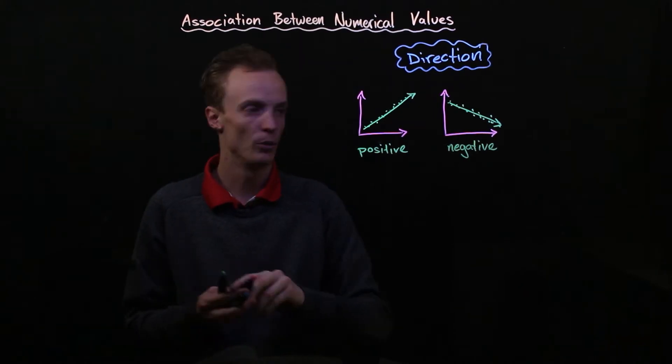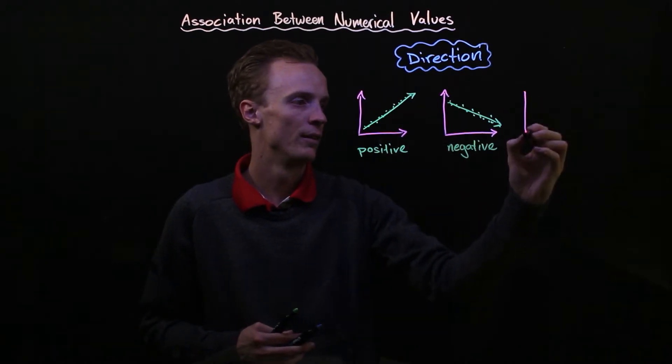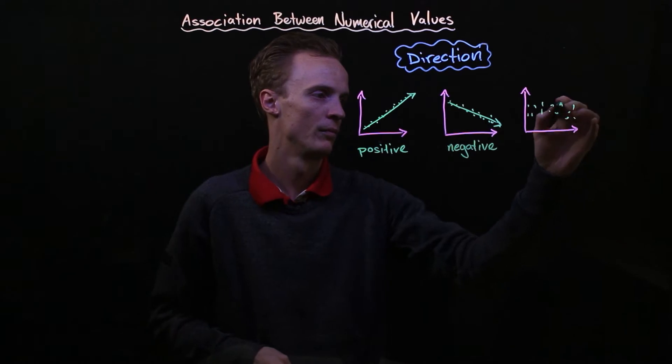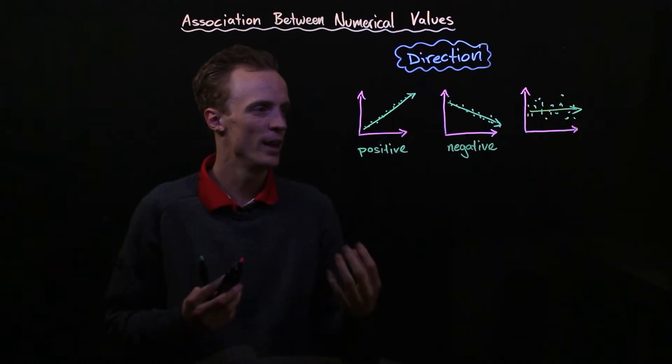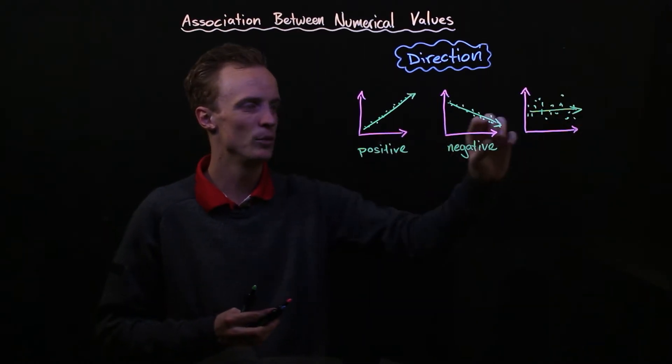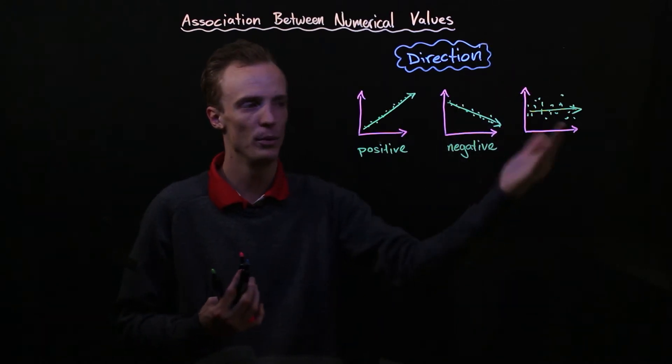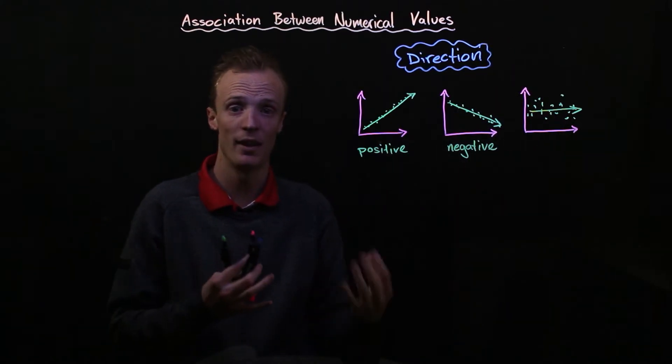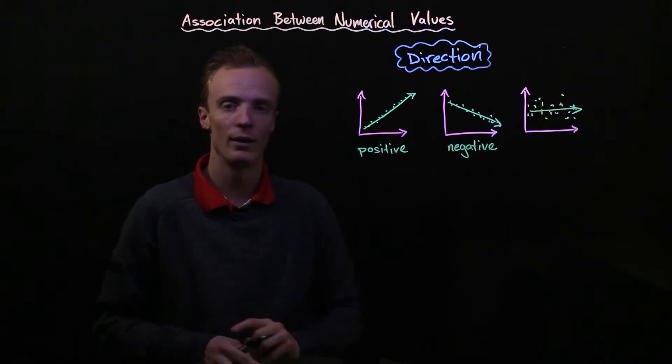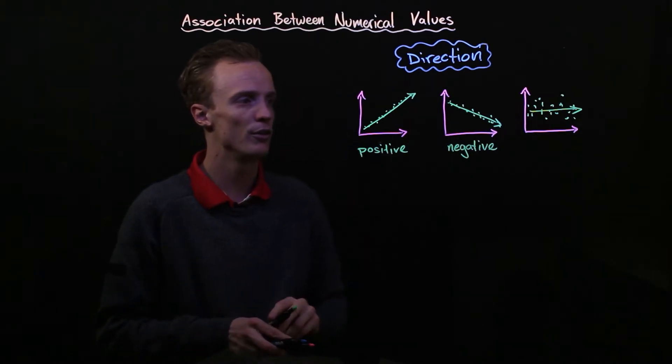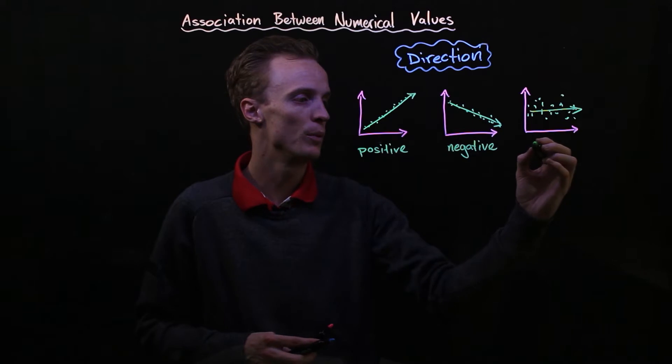And the third situation would look like this where there isn't really any sort of direction going up or down to the points and they can seem rather scattered. If we've got something like this we say that there is no direction or no correlation between them.